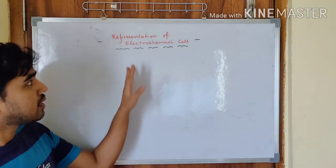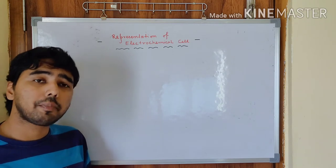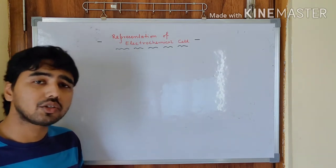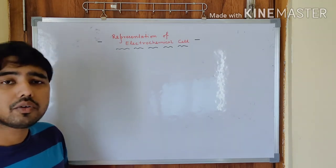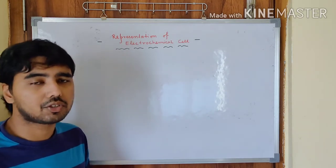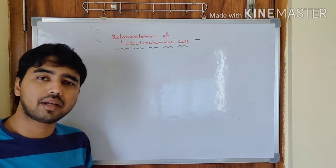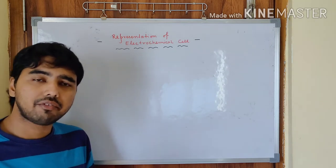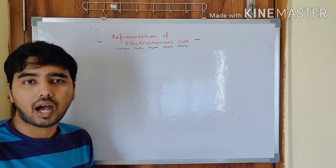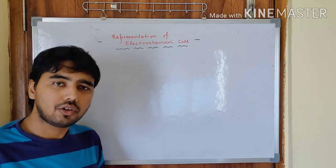Now we have written this topic - the representation of electrochemical cell - because today also we are going to carry forward our discussion based on the last topic. So we will choose some electrochemical cell and we will be noting it down with the help of those rules, how it should be represented.